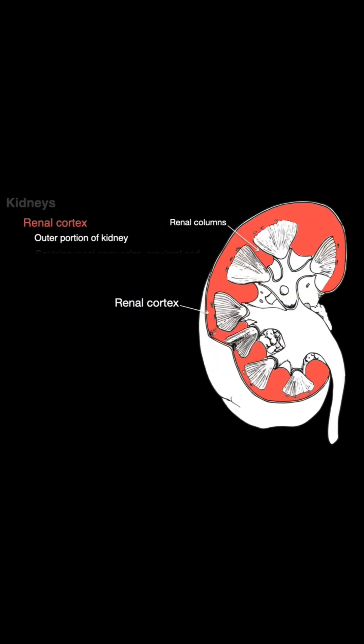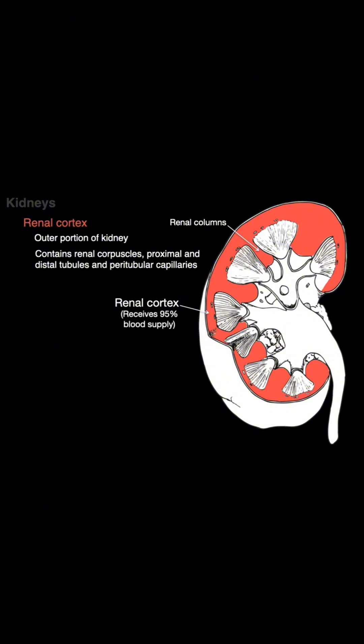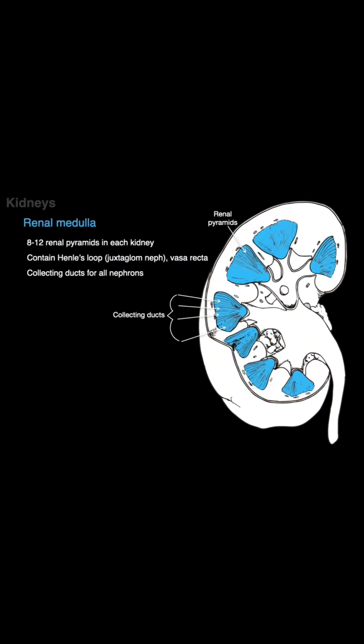The renal cortex is the outer region of the kidney, surrounding the renal medulla. It contains millions of tiny filtering units called nephrons, which are the functional units of the kidney responsible for filtering waste from the blood.